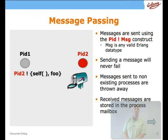Now let's look at passing a message between one process and another. The construct we use is the exclamation mark, or 'pling' operator. What you put on the left is the destination of the message, and on the right is any valid Erlang value. Typically these are tuples, but they don't have to be. Any valid Erlang value can be sent as a message. Message sending never fails — the operation always succeeds in the sending process. But if the PID is not an active process, the message is simply thrown away.